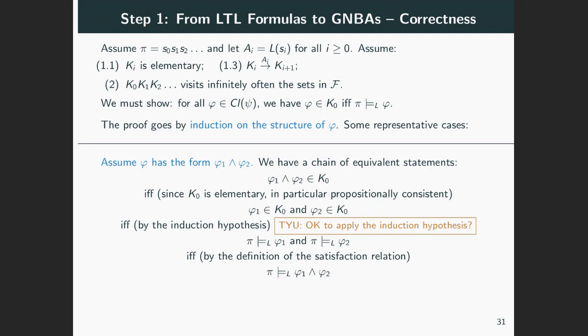We started with membership to K₀ and again proved by a chain of equivalences that this is equivalent to satisfaction by π. Notice that this case, like the previous one, was entirely routine. We just apply the definitions and the induction hypothesis. And the same proof will work in the same way for all propositional connectives.